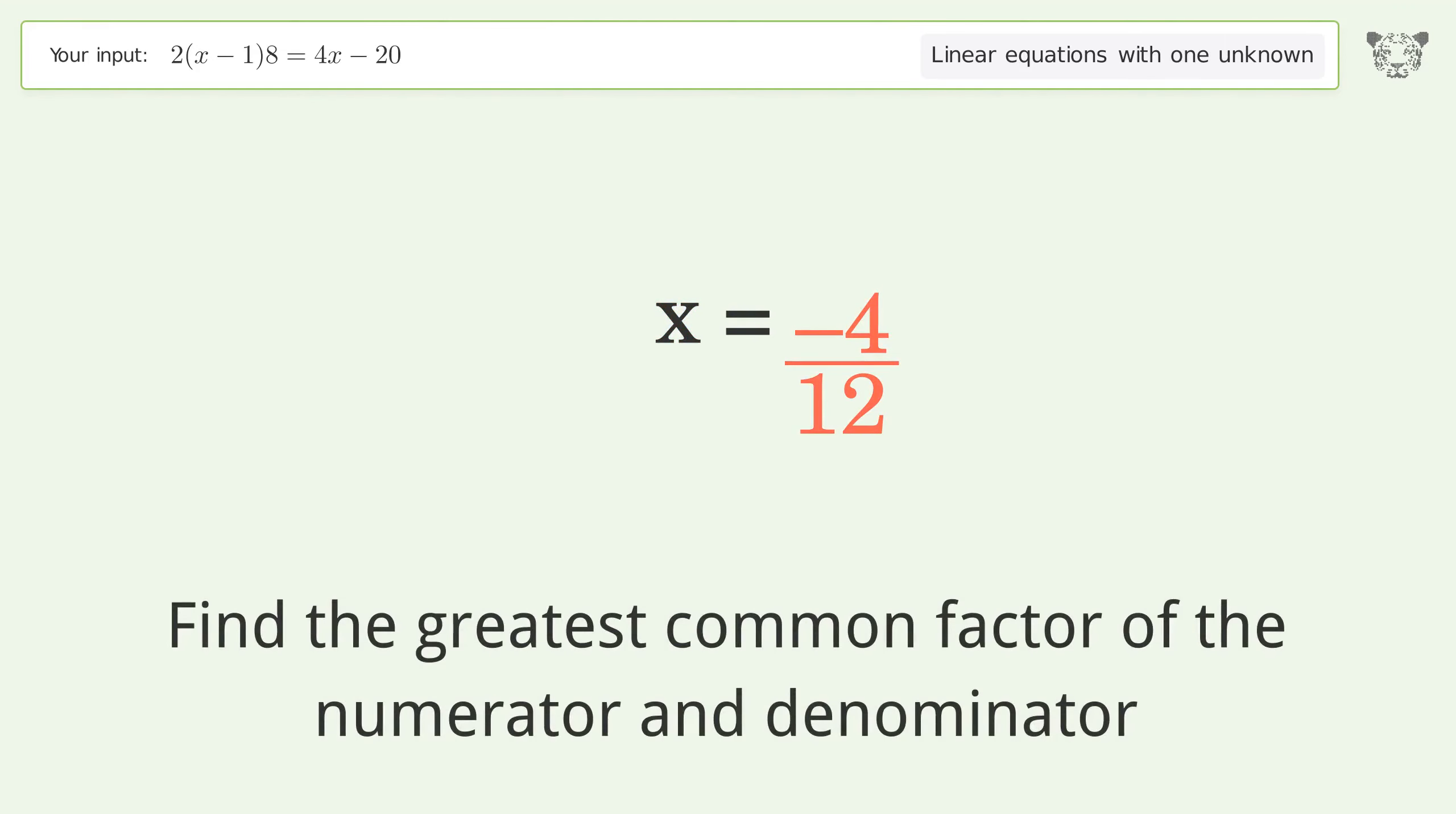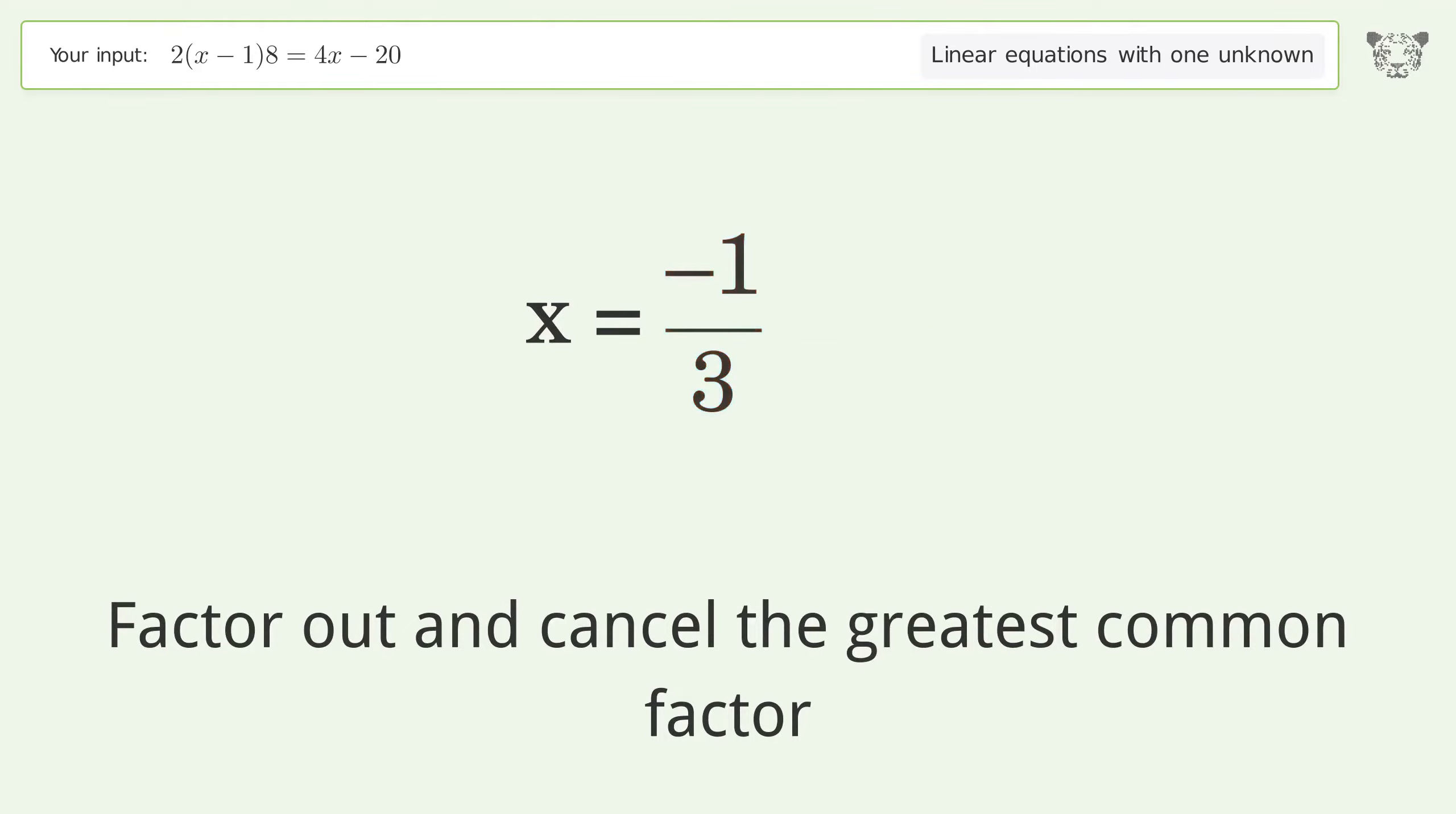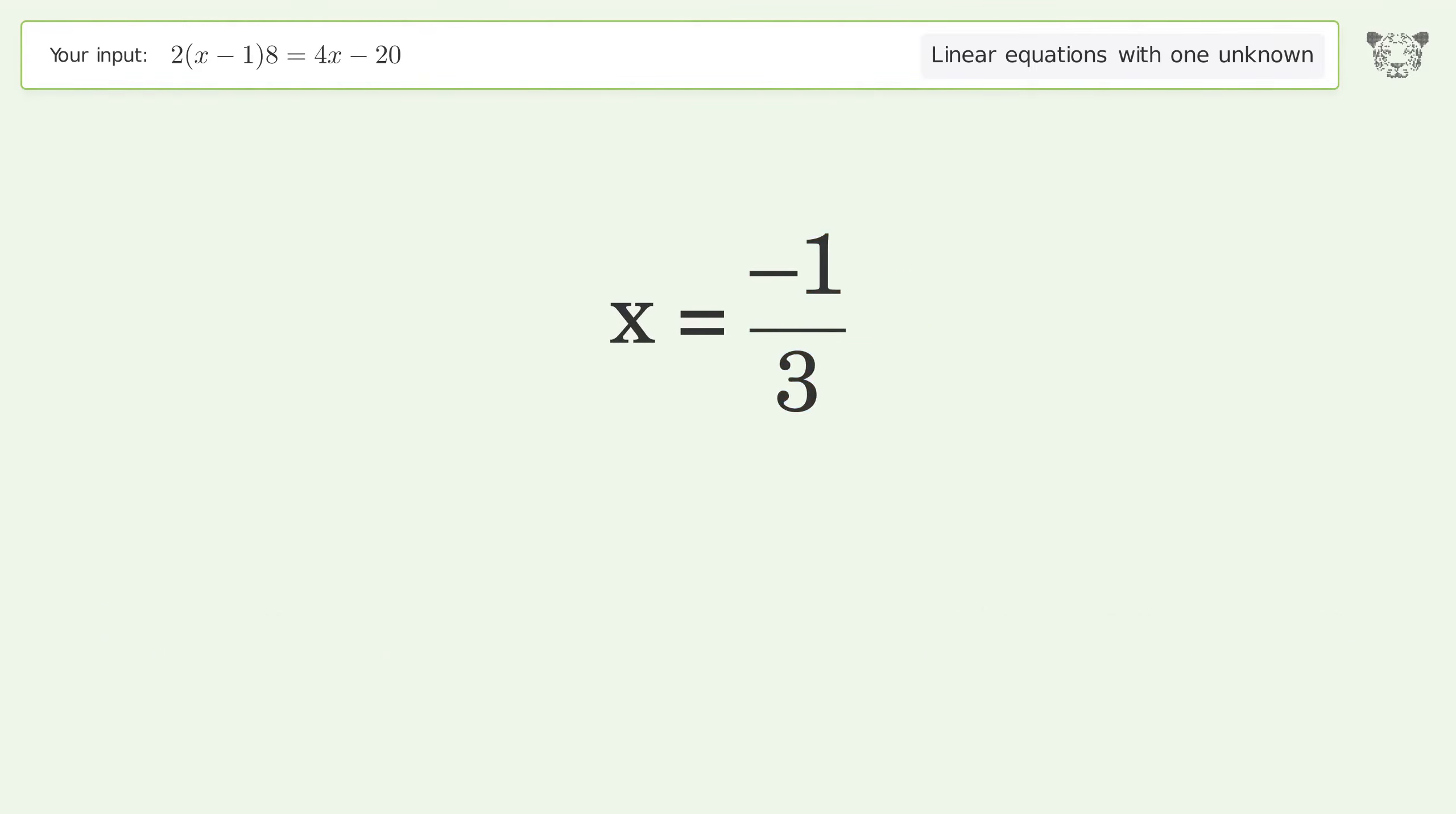Find the greatest common factor of the numerator and denominator. Factor out and cancel the greatest common factor. And so the final result is x equals negative one over three.